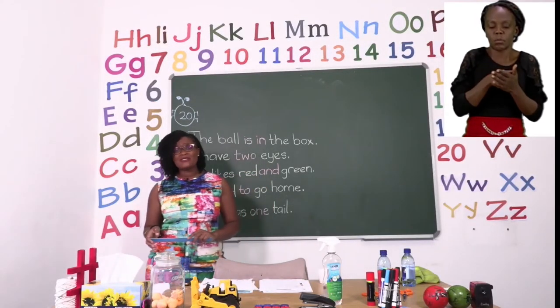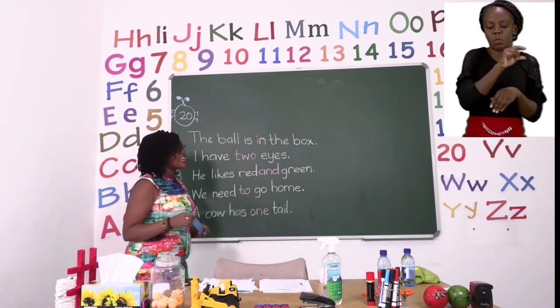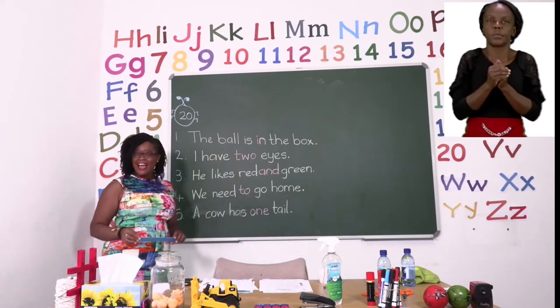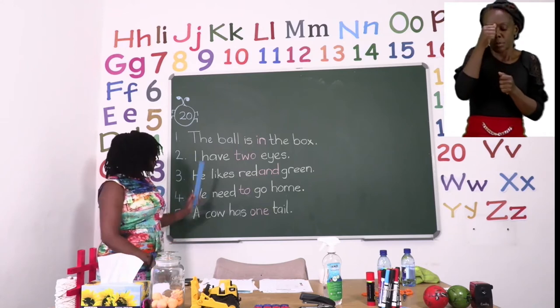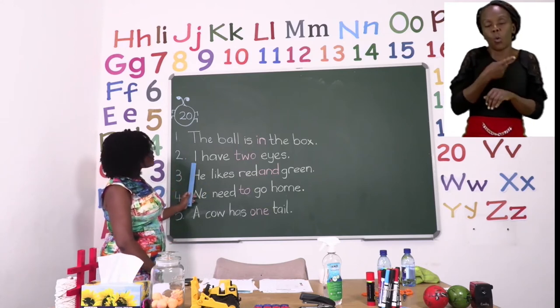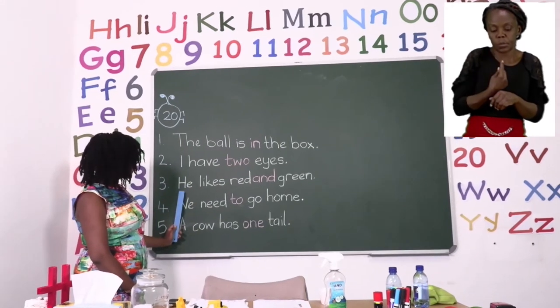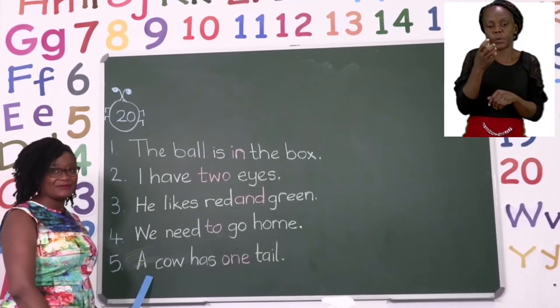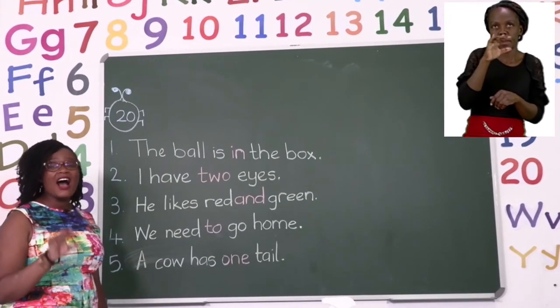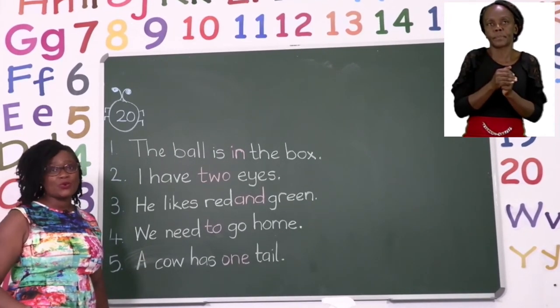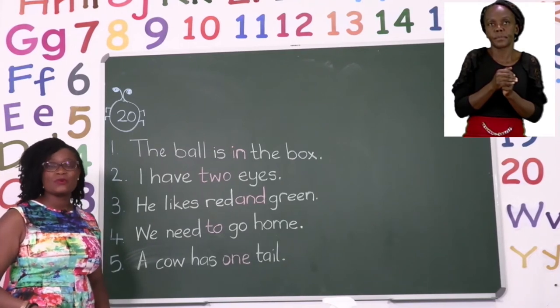Now the first thing we need to remember when we're making a sentence is that they must always be a capital letter. I have started all of my sentences with a capital letter. Then after that I would like you to please make sure that you use your sight words correctly.